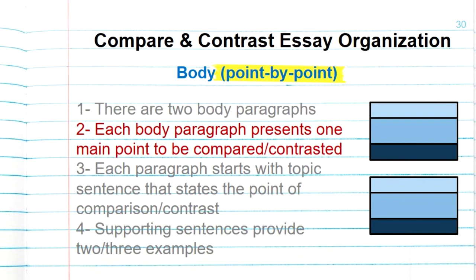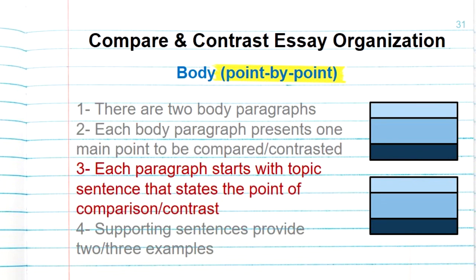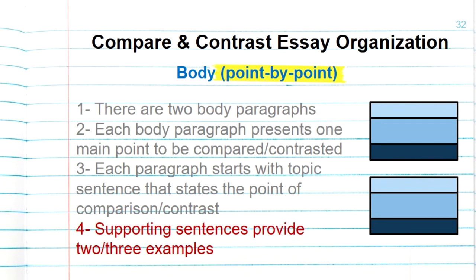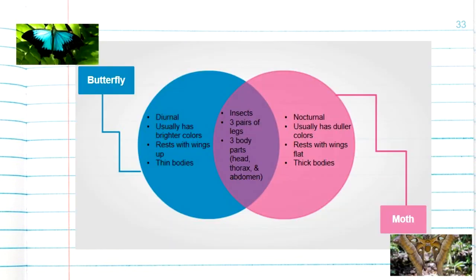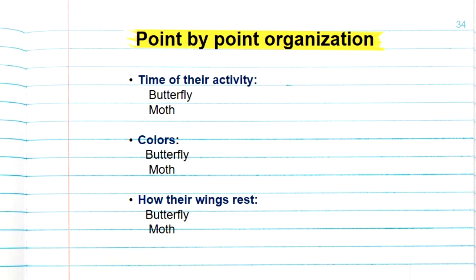In the first one, the point-by-point method, we have two body paragraphs. Each body paragraph presents one main point to be compared and/or contrasted. Each paragraph starts with a topic sentence that states the point of comparison or contrast, and the supporting sentences provide two or three examples.